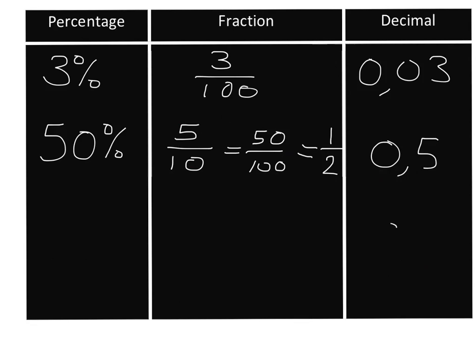All right, you try for yourself now — get 0,2 as a percentage. Write it in percentage form by first putting it into fraction form, and once you've done that, write that fraction in its simplest form. Pause the video now and do it in your homework book.